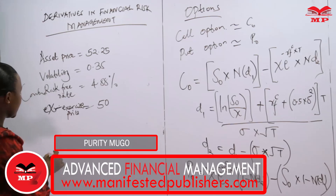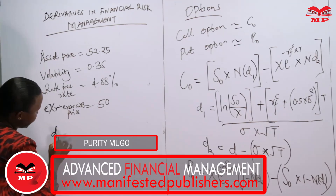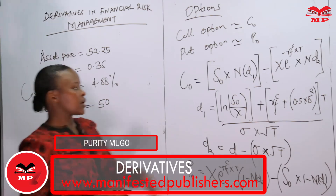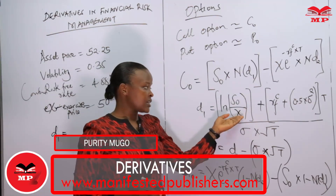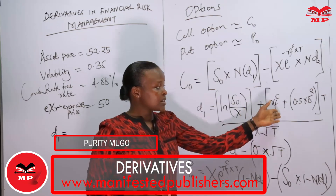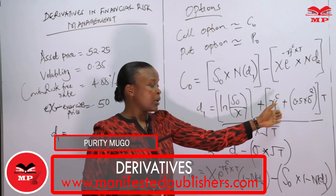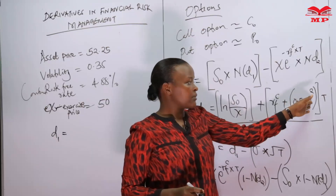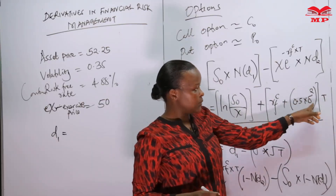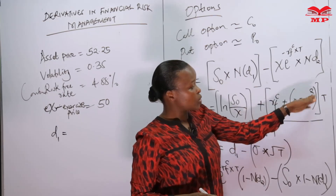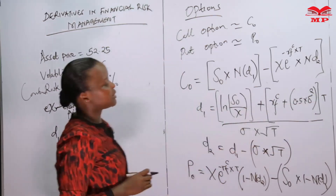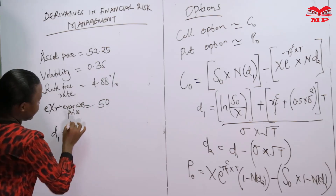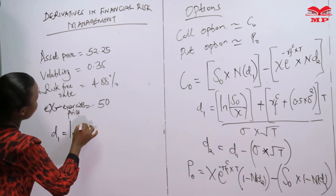We're going to start with calculating D1. D1 is the natural log of our asset price divided by our exercise price, plus our continuously compounded risk-free rate, plus the variance — the volatility denoted by sigma — squared, times T, all over sigma times the square root of T.